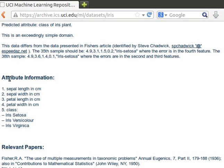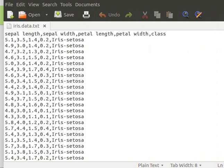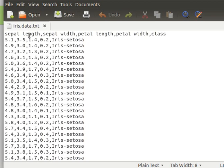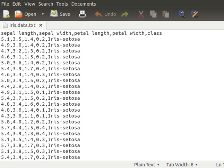This is it. It has five attributes: sepal length in centimeters, sepal width, petal length, and petal width, and then a class. We have three classes: iris setosa, iris versicolor, and iris virginica. You notice here these are the column names or the attribute names or the field names.